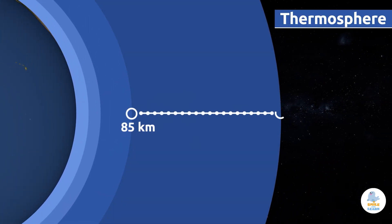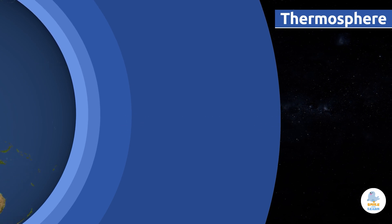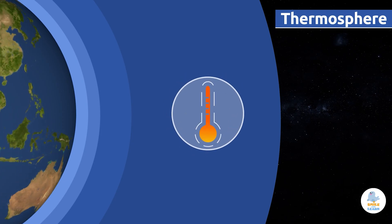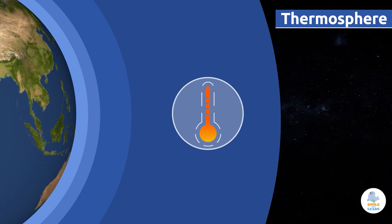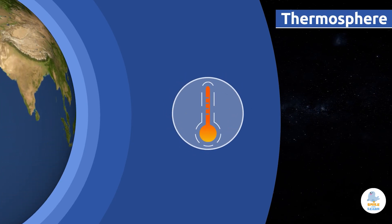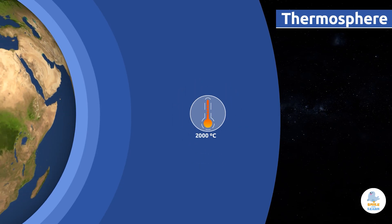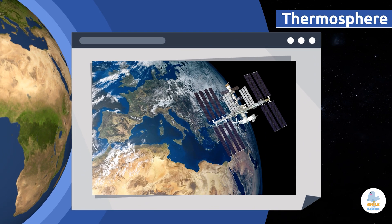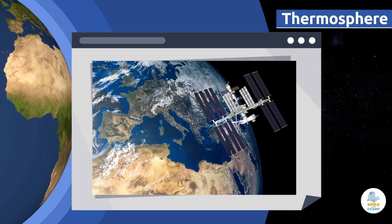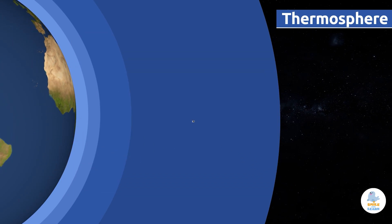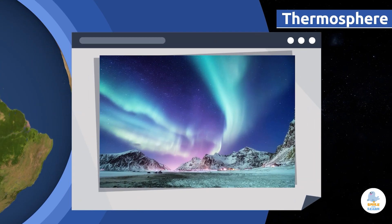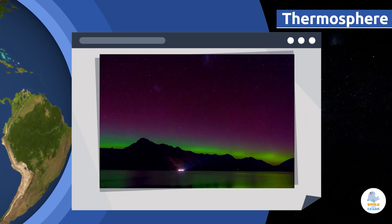The thermosphere extends to an altitude of 85 to 500 kilometers above sea level. This layer is the warmest of all five layers. Air temperature on the surface of the Earth is kept constant thanks to the thermosphere. In this layer, temperatures can rise to more than 2,000 degrees Celsius. The International Space Station orbits the Earth within the thermosphere. Impressive natural phenomena, like the northern and southern lights, occur in the thermosphere.